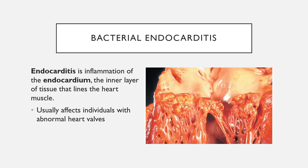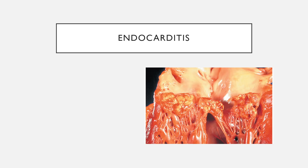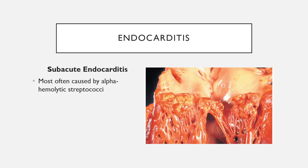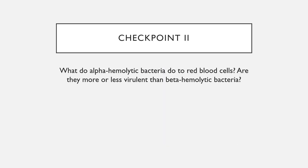Endocarditis can develop quickly — acute endocarditis — or slowly — subacute endocarditis. Both are dangerous but caused by different pathogens. Subacute endocarditis is most commonly caused by members of the alpha-hemolytic streptococci group and progresses over several months. In this checkpoint, recall what alpha-hemolytic bacteria can do to red blood cells and whether they are more or less virulent than beta-hemolytic bacteria.